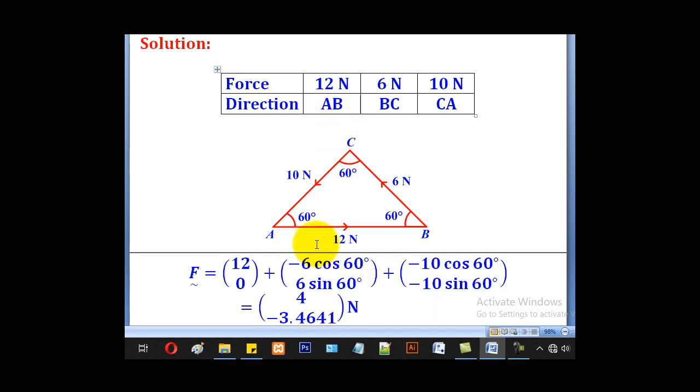AB is for 12N, so AB put 12. BC is for 6N, so come to BC, put 6. CA is for 10N, come to CA, put 10.